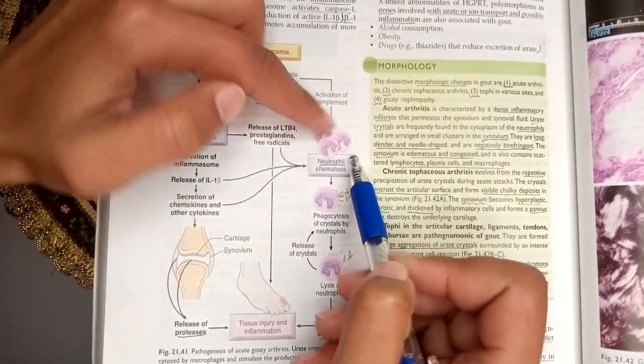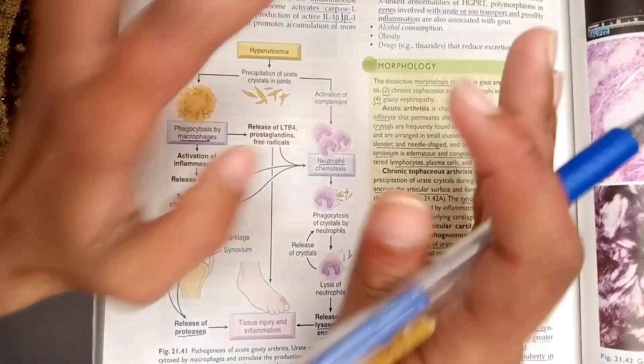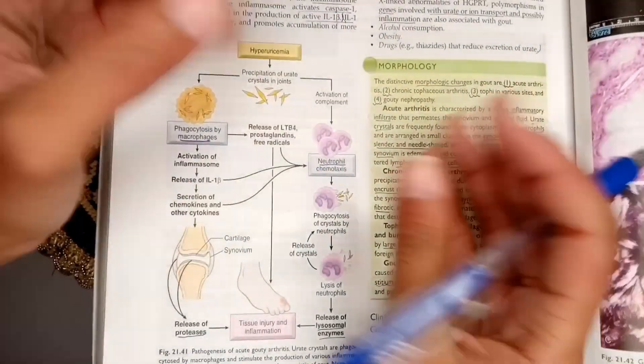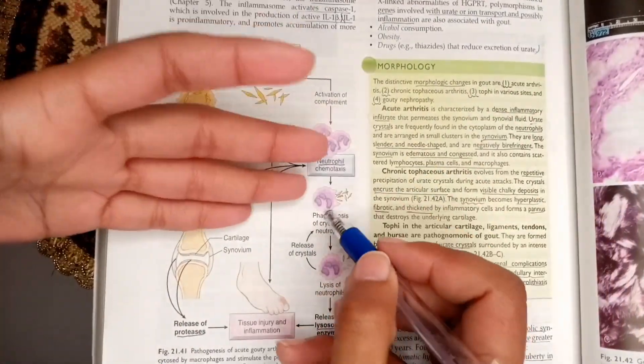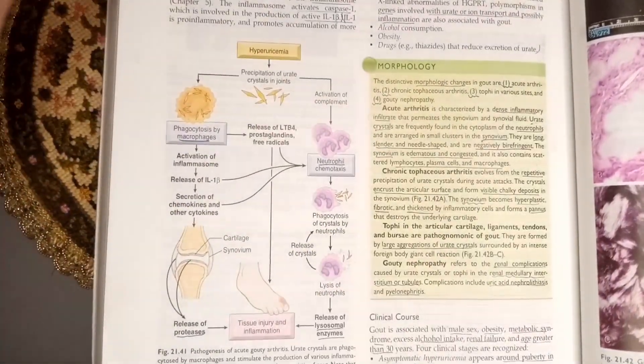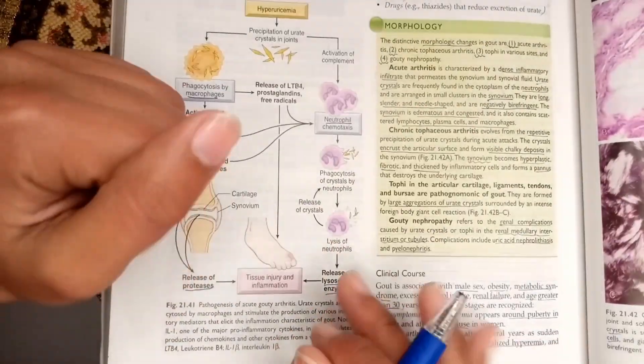Once the neutrophils have reached the site of injury where the uric acid was deposited, they will phagocytose those crystals.